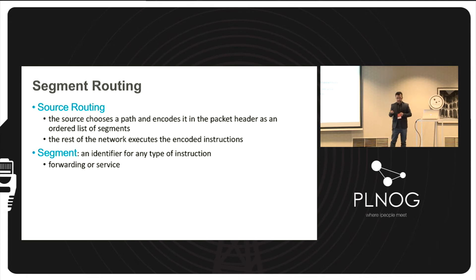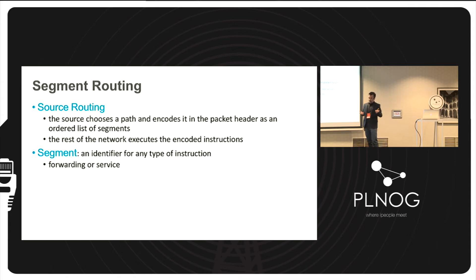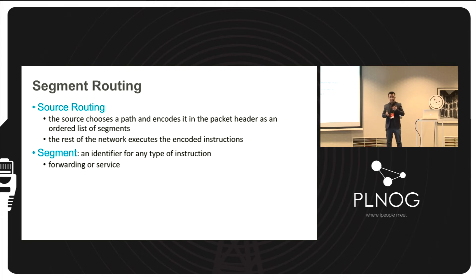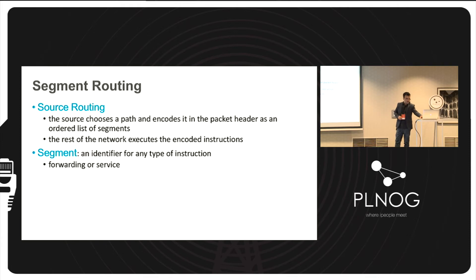A segment is a label or ID — it can be forwarding or service-based. A forwarding segment tells the network to follow a specific path or perform traffic engineering. A service-based segment is used, for example in enterprise scenarios, to steer traffic through a firewall before reaching the destination. So the packet carries instructions: go through the firewall, do some filtering, and then proceed to the destination.